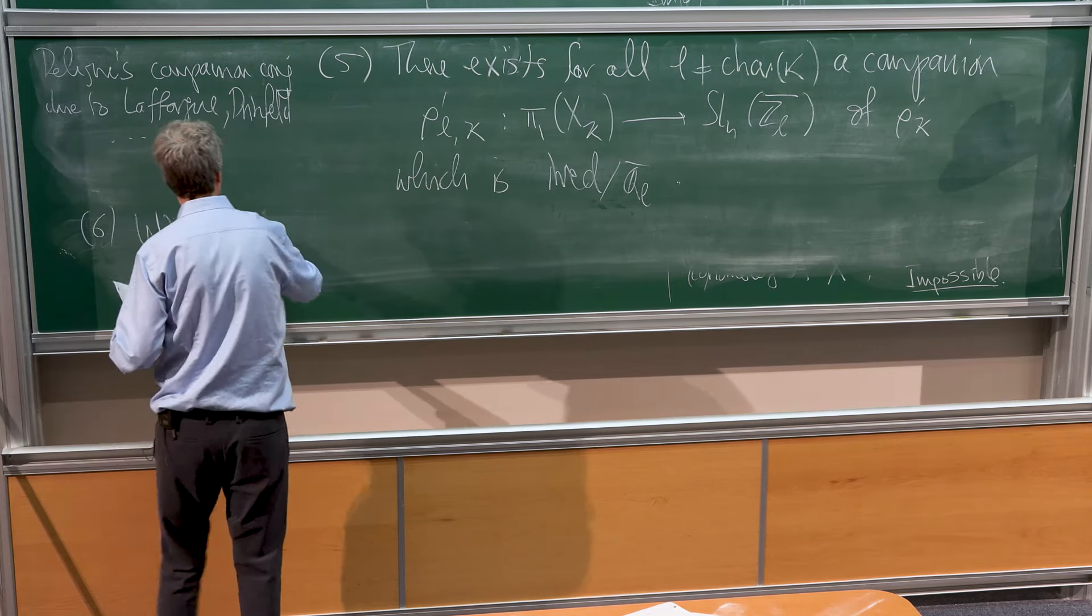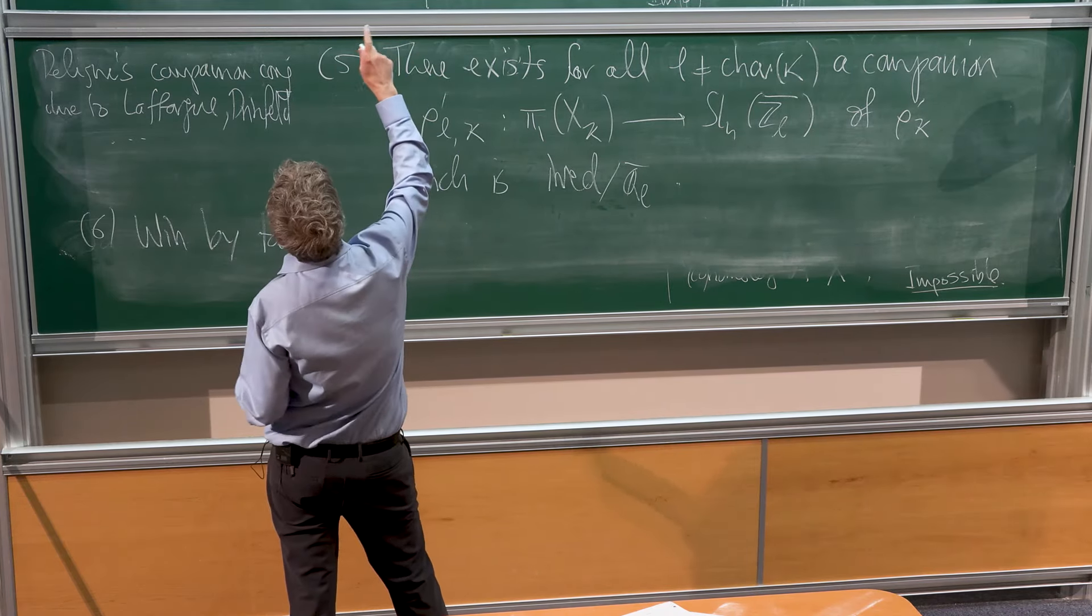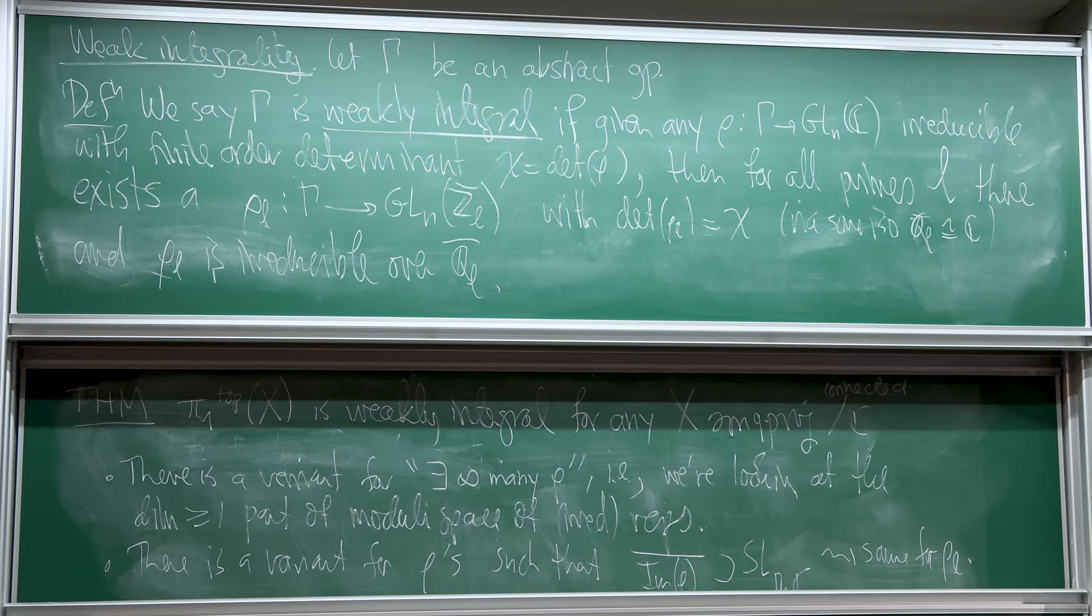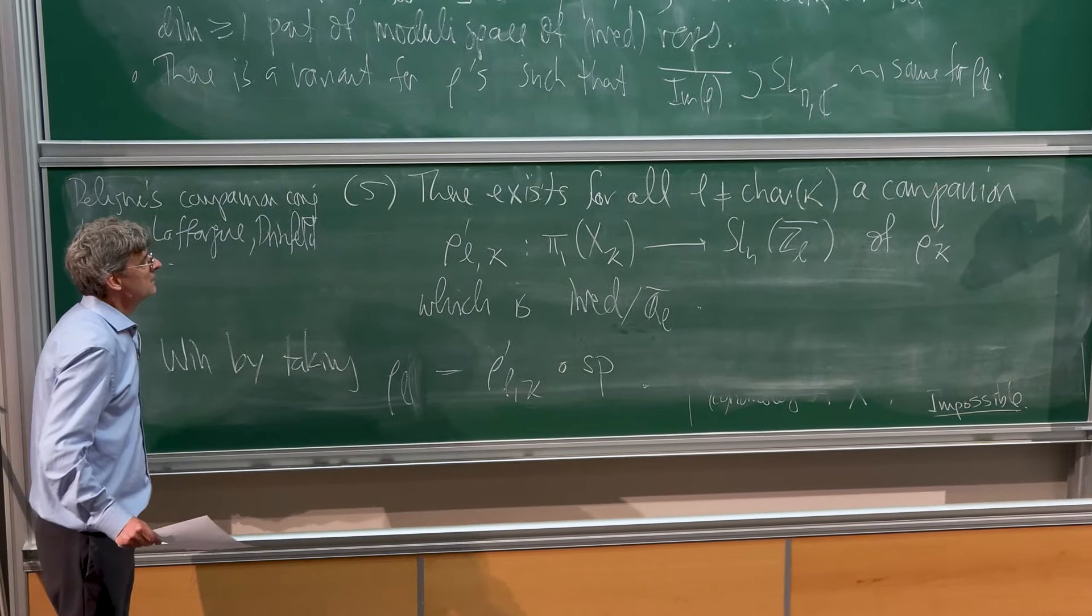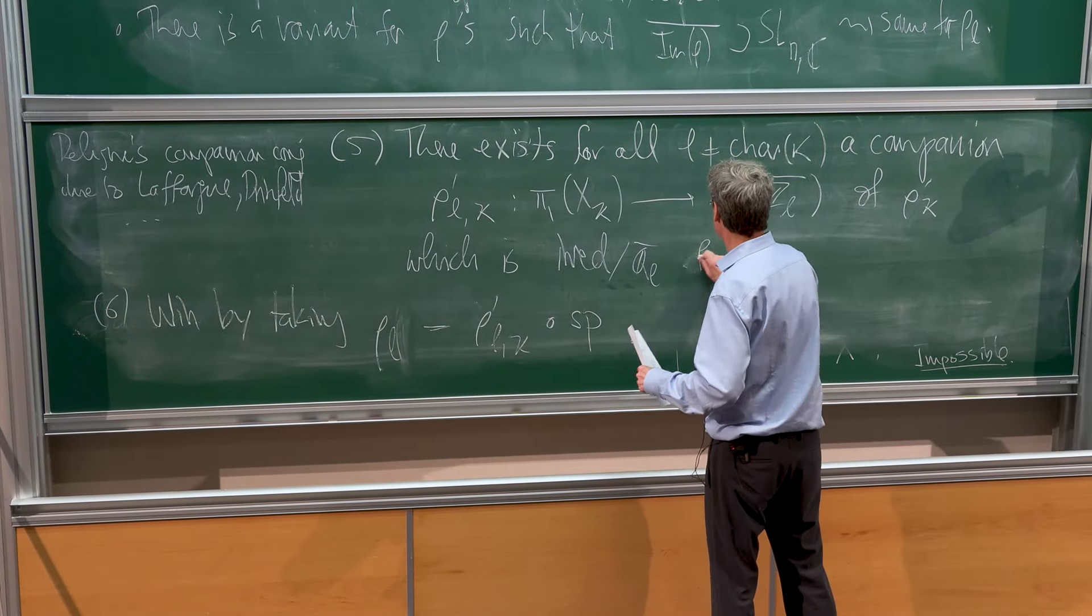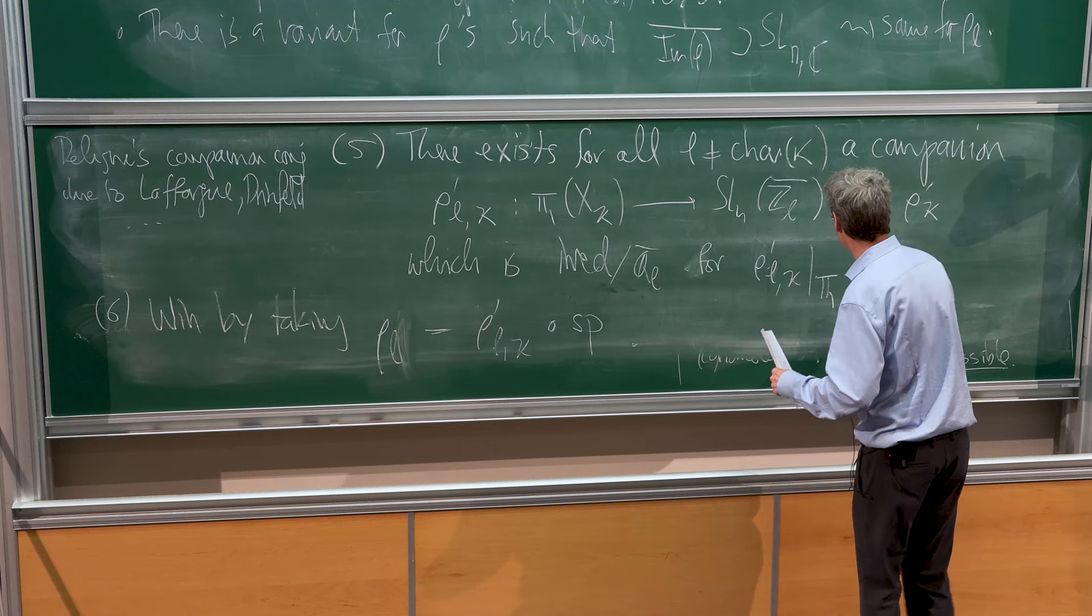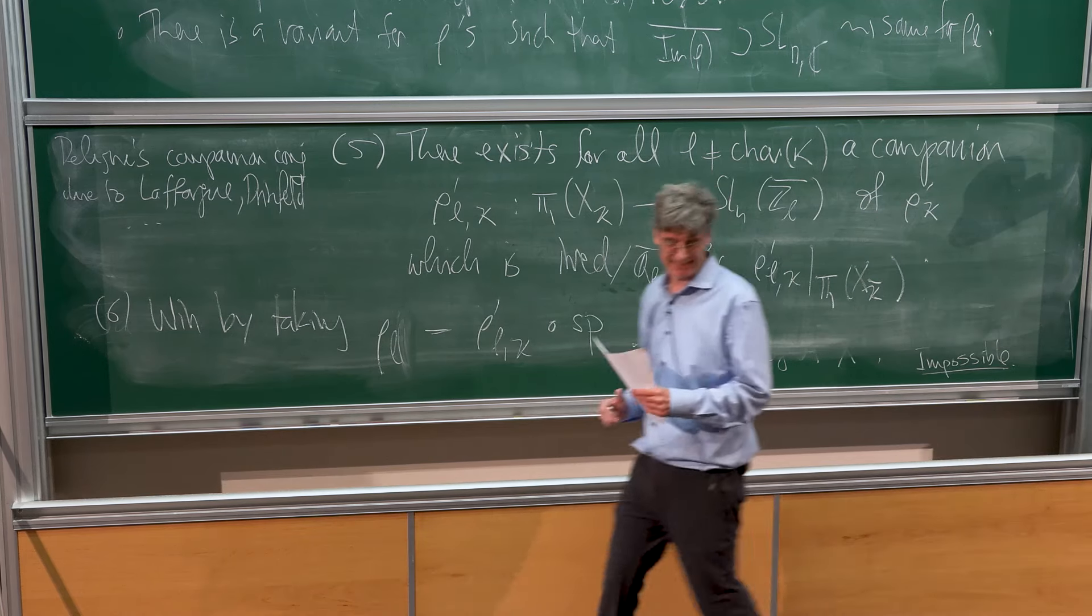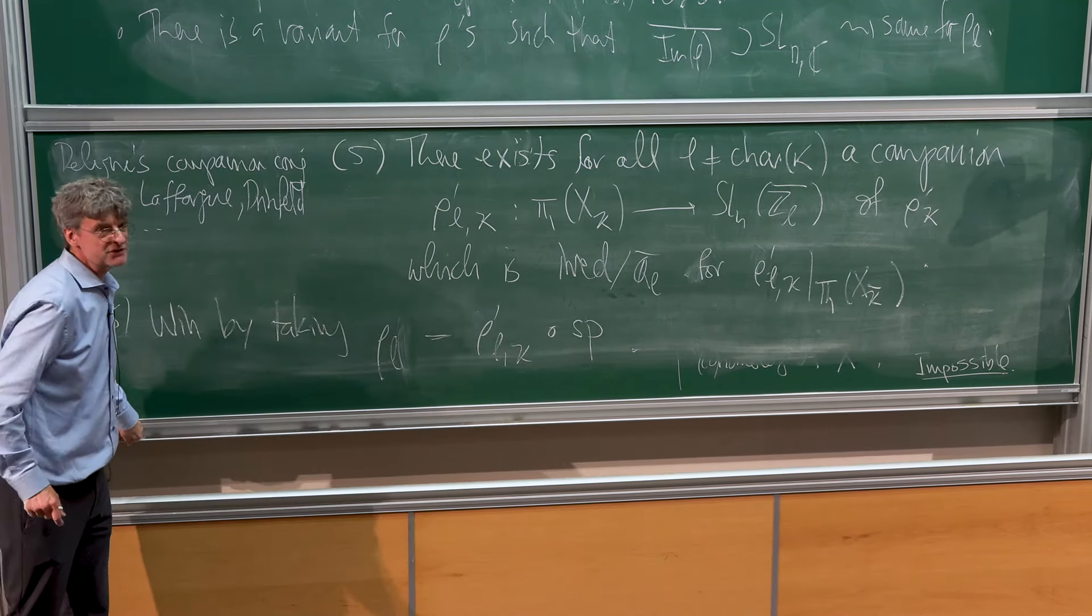A companion is another representation so the characteristic polynomials of the Frobenii are the same as for the first one. This irreducibility can be read off from these characteristic polynomials, so you land in the open locus you want. Step six: we win by taking rho L - the rho L we want in the theorem for weak integrality - you just take rho prime L kappa and precompose it by this specialization. When you restrict to pi 1 of X kappa bar, that's what you need. Thank you.